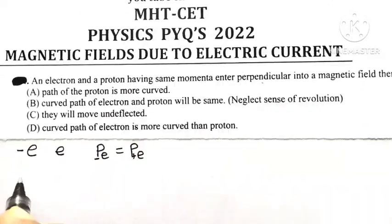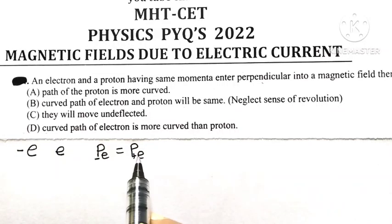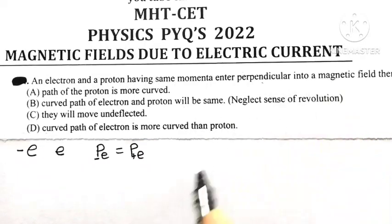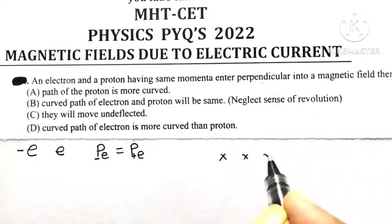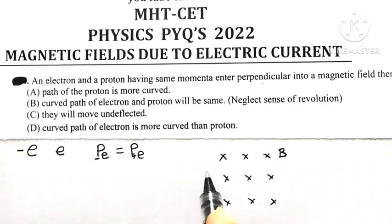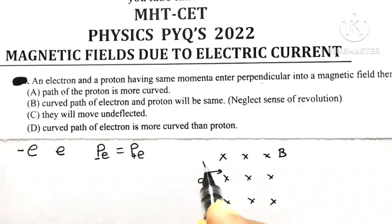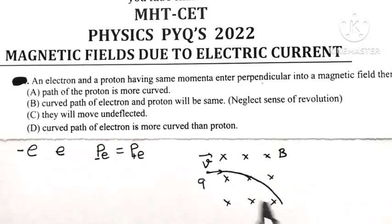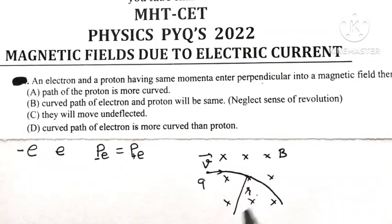As far as charged particles are concerned, whenever a charged particle enters a uniform magnetic field, it travels along a circular path. Here we are having a transverse magnetic field B. If a charge Q moving with velocity V enters this field, it travels along a circular path of radius R.